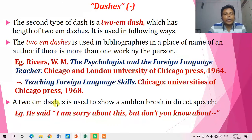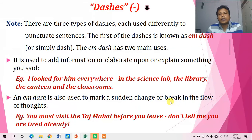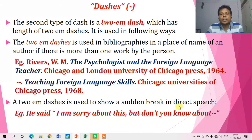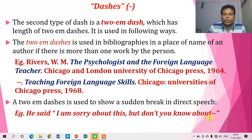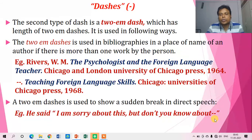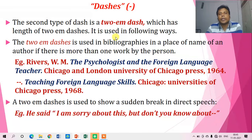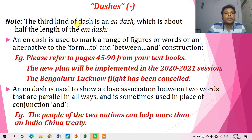Another use of two-M-dashes is to show a sudden break in direct speech. When there is a sudden break in direct speech, we use two M-dashes. For example: 'He said, "I am sorry about this, but don't you know about——"' This shows a break in the thought within direct speech, and two M-dashes are used at the end.